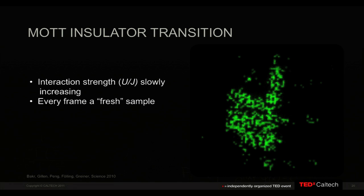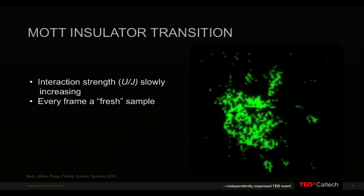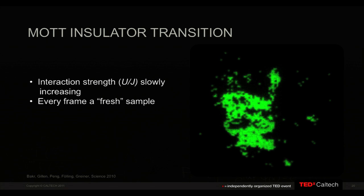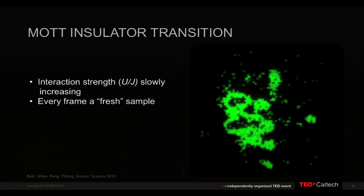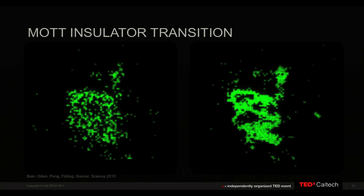Let's do that experiment. Each new frame shows a different snapshot: the tunneling atoms appear in random locations, flashing up and down. As we slowly increase the interaction, you see domains forming where the lattice is actually filled and the atoms are localized to certain lattice sites and can no longer tunnel. Compared to before, where everything was freely able to tunnel, this system has become an insulator — no more flux is taking place.